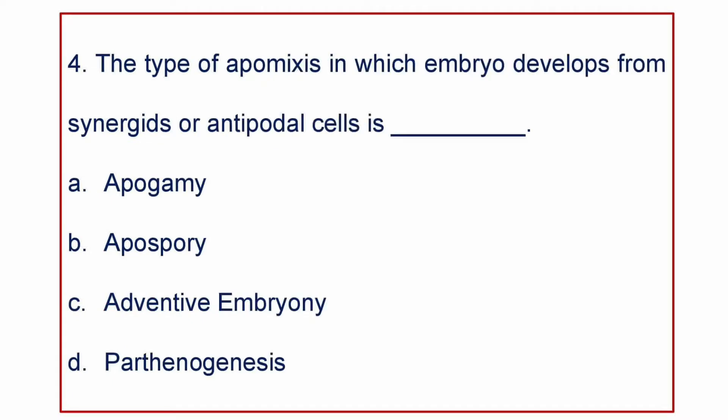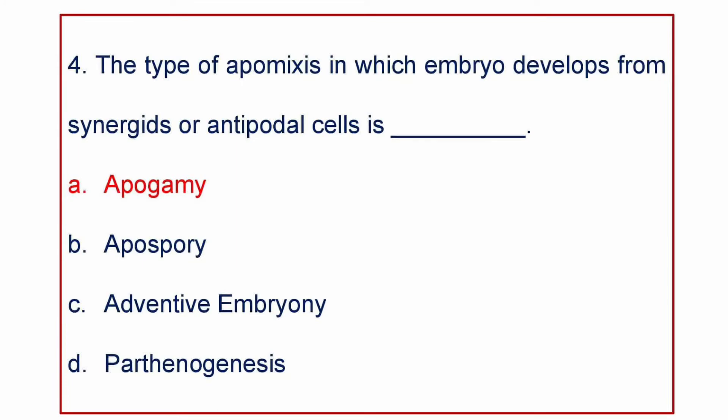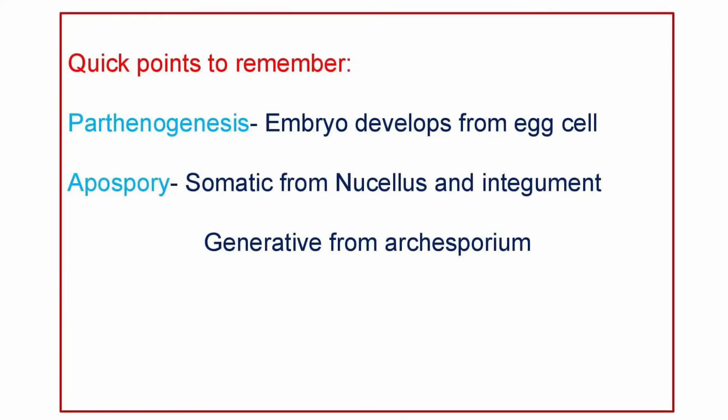Next question: the type of apomixis in which embryo develops from synergids or antipodal cells is — A) Apogamy, B) Apospory, C) Adventive Embryony, or D) Parthenogenesis. The answer is Apogamy — the embryo develops from synergids or antipodal cells. Quick points: in Parthenogenesis, embryo develops from egg cell; in Somatic Apospory, embryo develops from nucellus and integument; in Generative Apospory, embryo develops from archesporium.